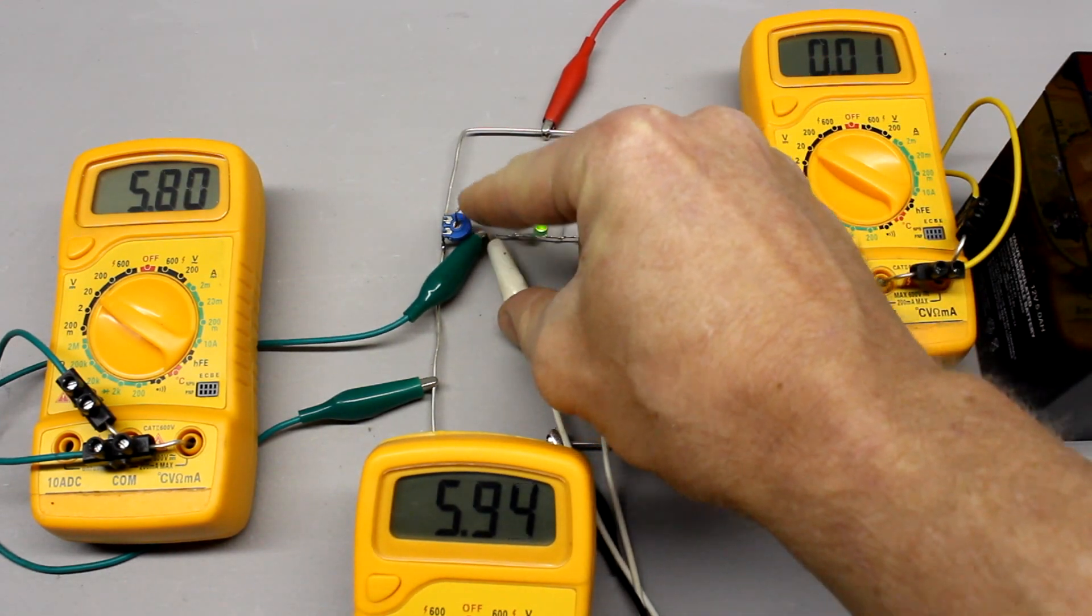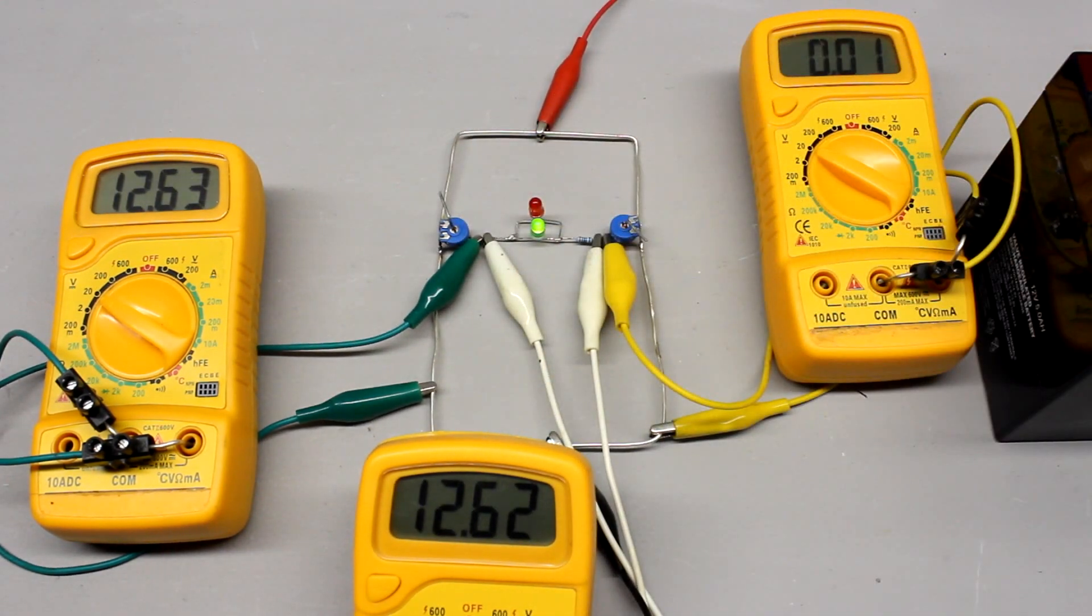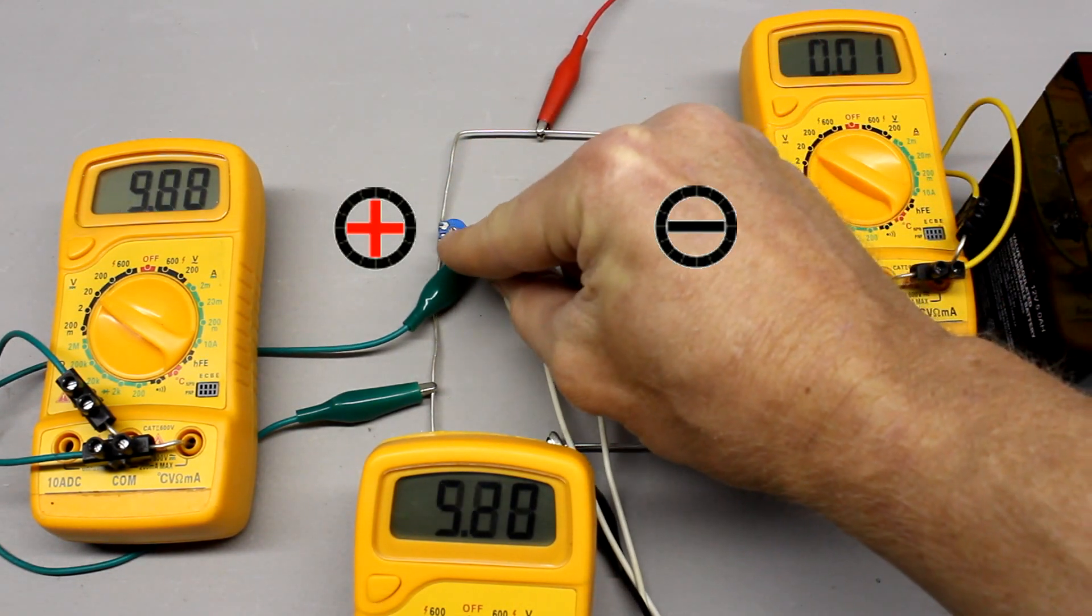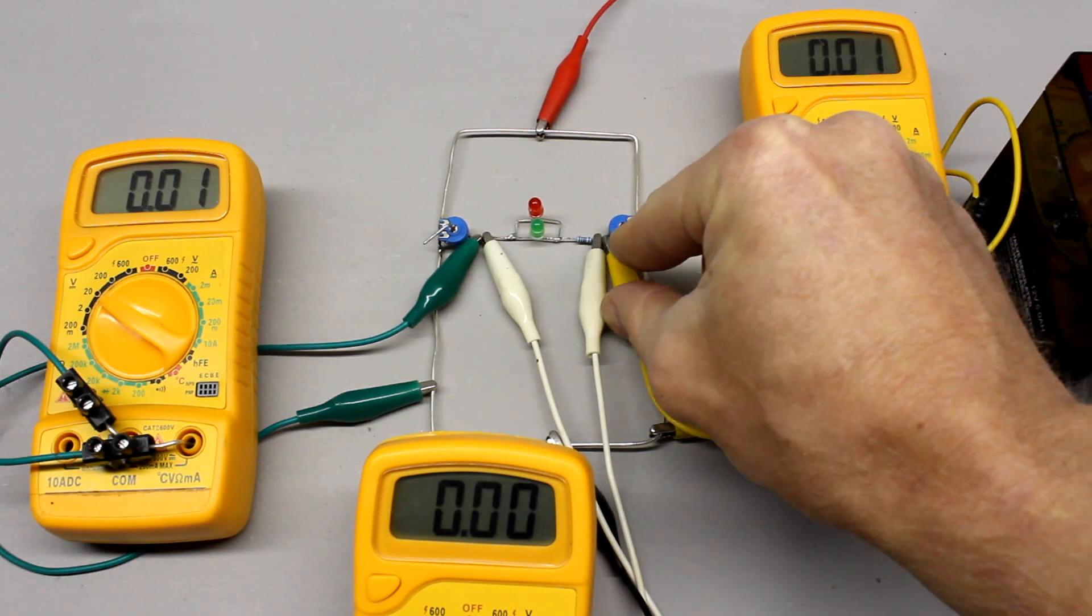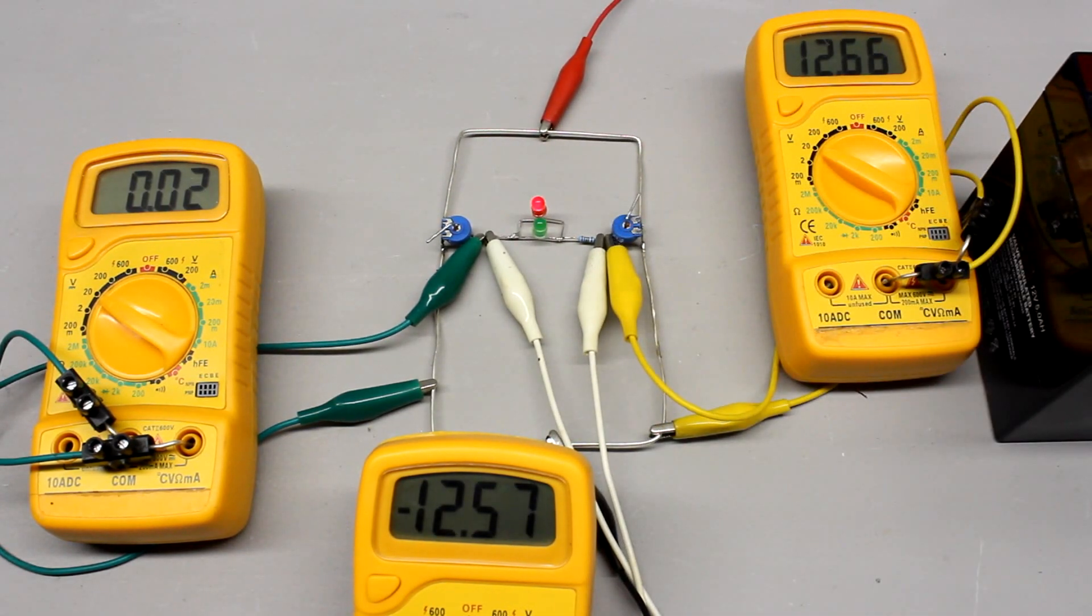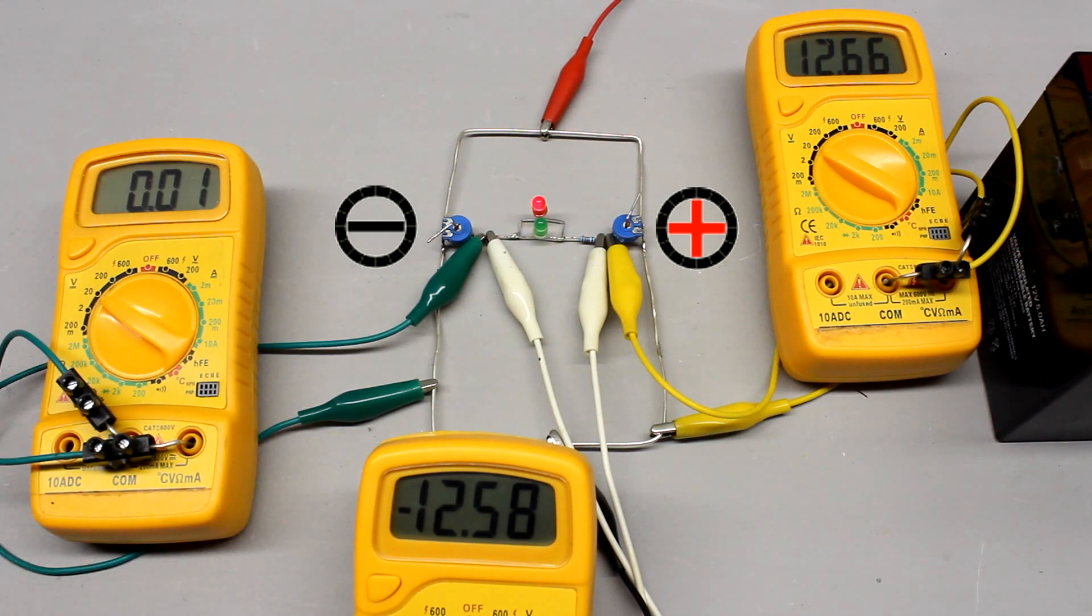If the output voltage of the right potentiometer is adjusted to a lower value, the positive terminal is at the left side of the load. However, if the output voltage of the left potentiometer is adjusted to a lower value, the positive terminal is at the right side of the load.